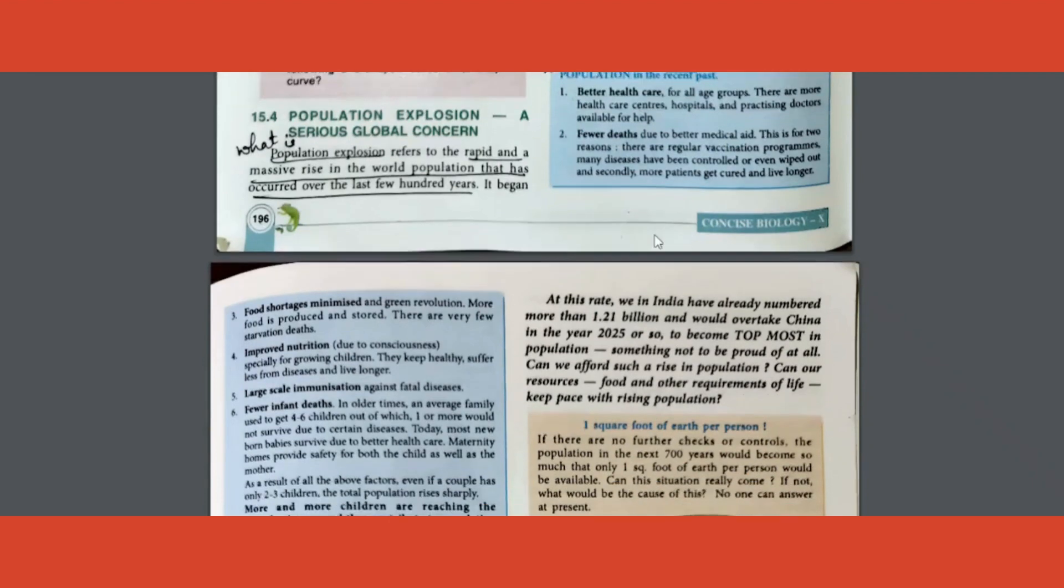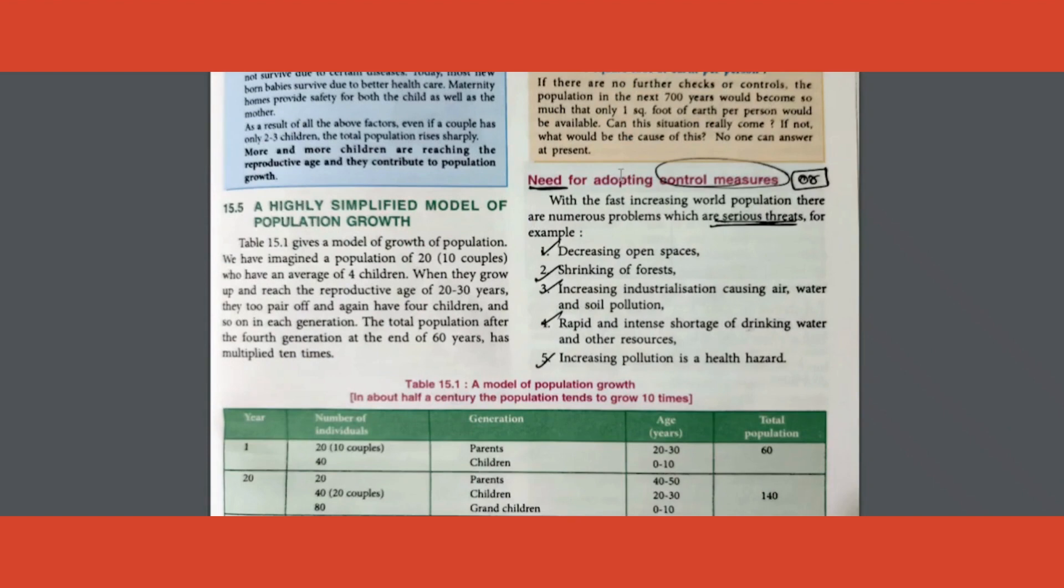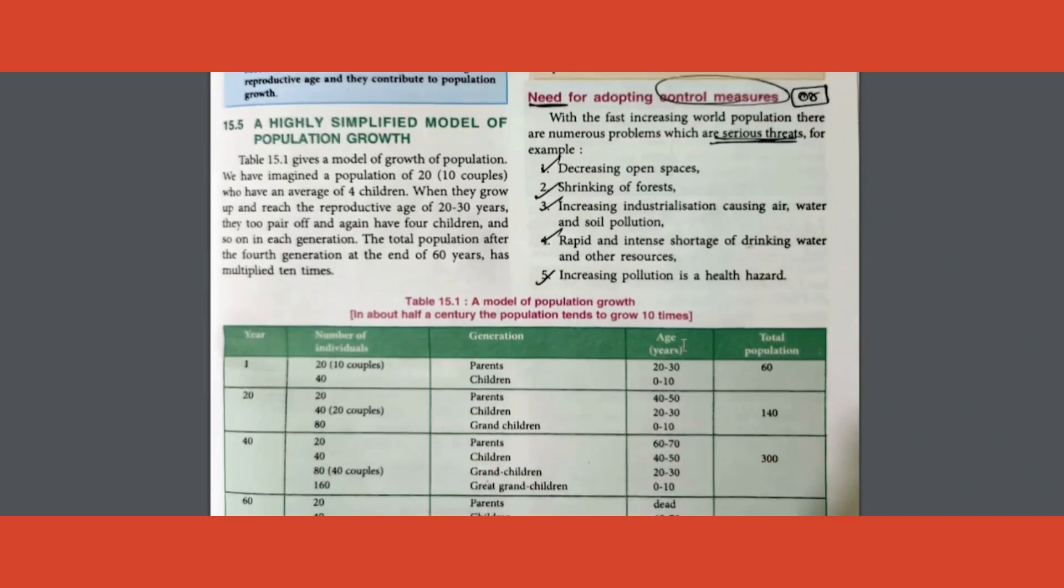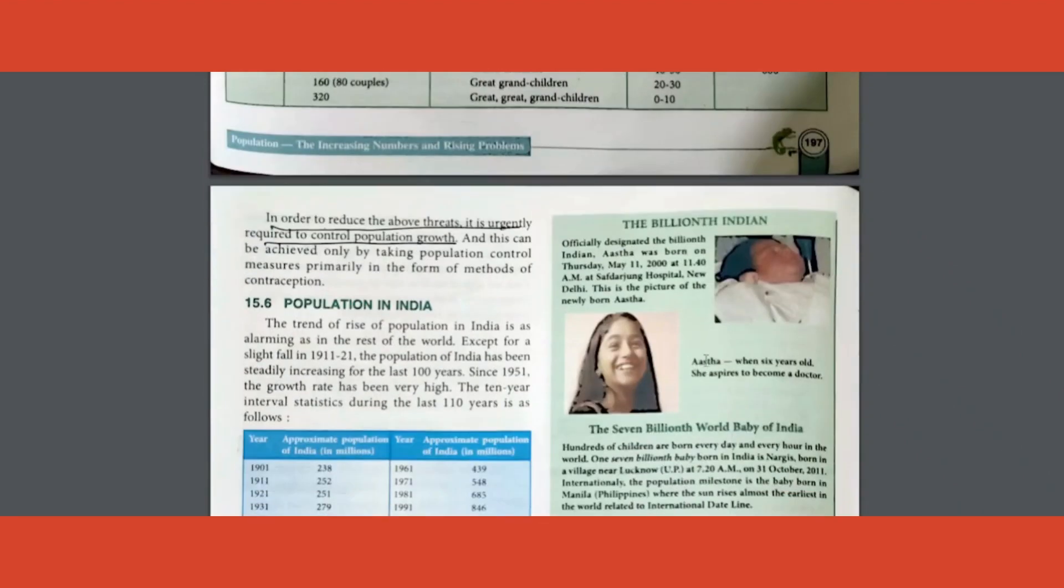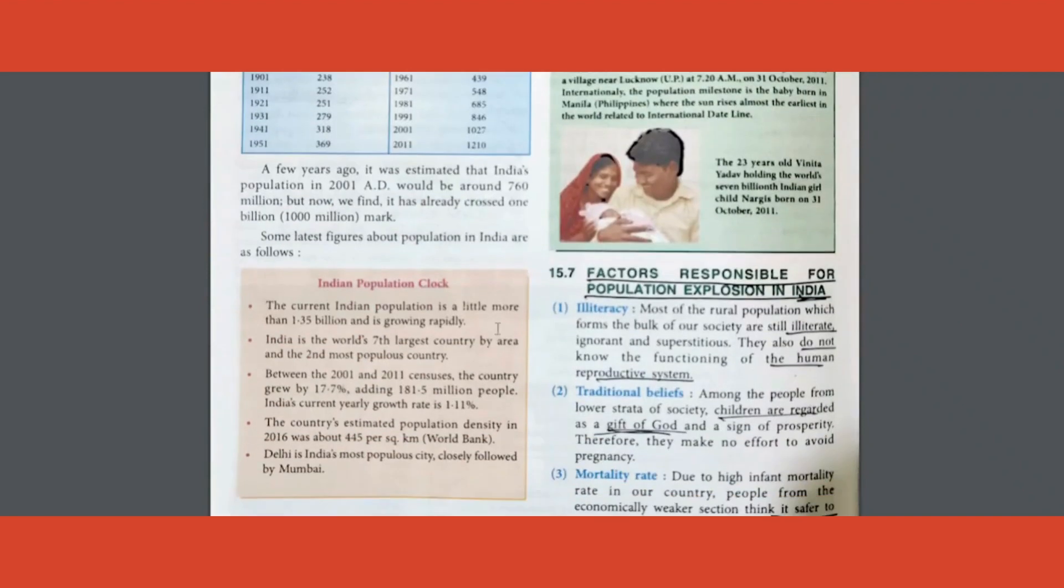Going ahead, how do you control or what is the need for controlling population explosion? If not controlled, what are the threats? Two ways this same question can be asked. These are the answers for it. Learn at least four. Like I already told you, two mark is the highest mark, so any four you learn, you need not worry so much.